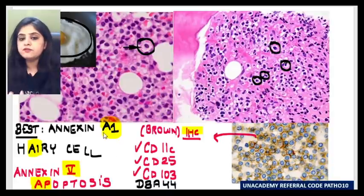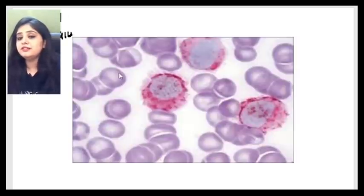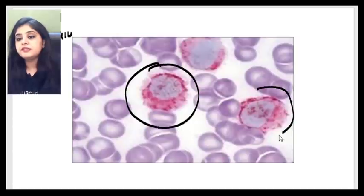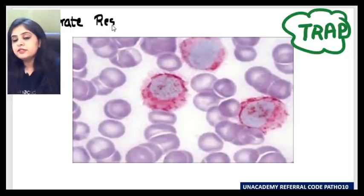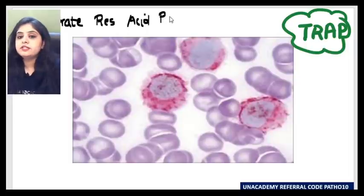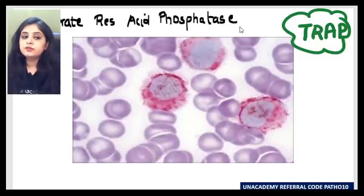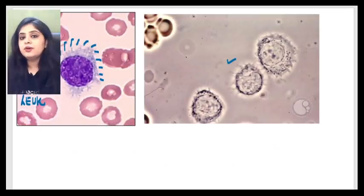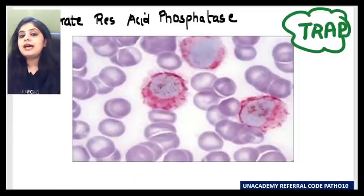All of those — CD markers, DBA44, Annexin A1 — are immunohistochemical markers. But what is the special stain for hairy cell leukemia? This reddish color stain is TRAP, which stands for Tartarate Resistant Acid Phosphatase. TRAP positivity is the special stain finding in hairy cell leukemia. To summarize: hairy cells on phase contrast microscopy, fried egg appearance on biopsy, IHC markers, and TRAP positivity.